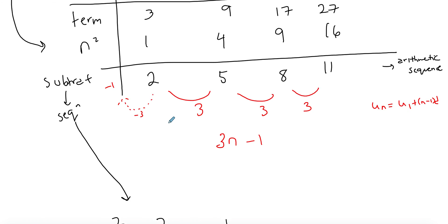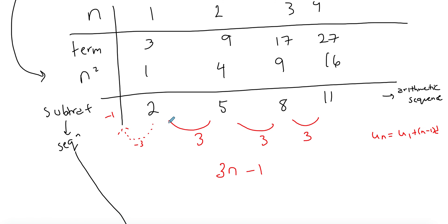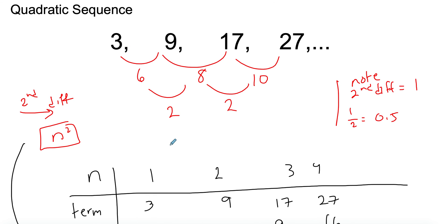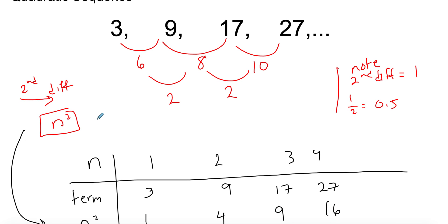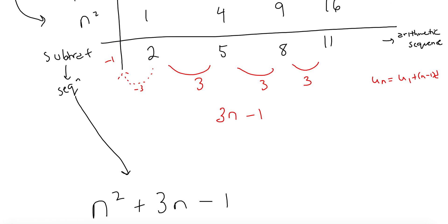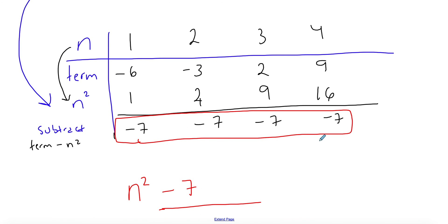This same method works for cubic sequences too — if you reach the subtraction row and find another quadratic sequence, you know how to find it. It's just a build-up from each type of sequence. Always remember: divide the second difference by 2, follow through with the table, and the subtraction row will either be a constant term or a linear arithmetic sequence.